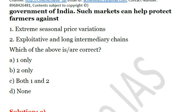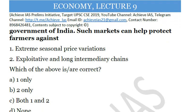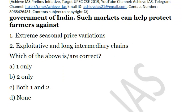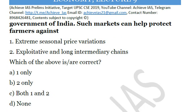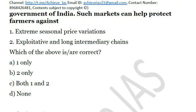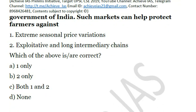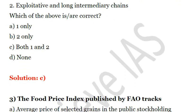We provide the full explanation only for the first question so that you can assess the quality of our questions and explanations. If you want explanations for all questions, you can contact us at hyes21@gmail.com or at 8968-426481. There will be a minimum cost for the subscription of explanation PDFs, kept as low as possible for affordability and our motivation. The solution for Q2 is C — both are correct.